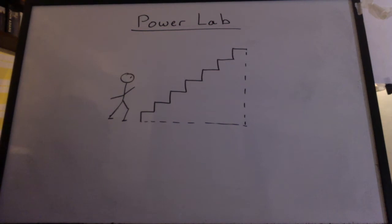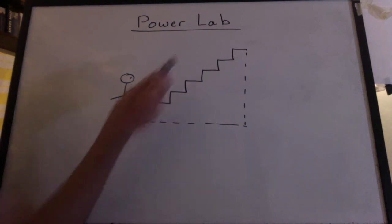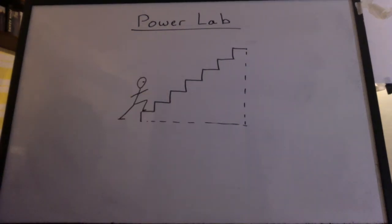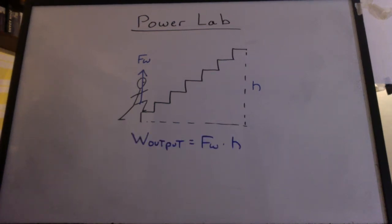If you have a plate of stairs at home, you can do this lab yourself. Instead of bricks, it's going to be your own body that you're going to lift up the stairs. As you run up the stairs, you're going to flex your leg, which will lift your body. You will have to exert a force at least equal to your body weight. That force will be exerted vertically through a distance of the height of the stairs. So the work output for you is going to be the body weight times the height.